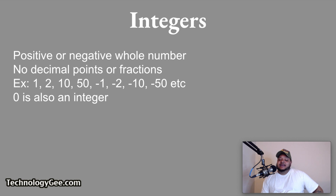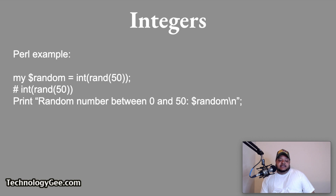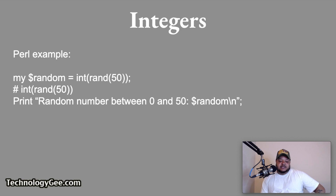The number zero is also considered an integer, even though it has neither a positive nor negative value. In most programming languages, you can convert a number into an integer by using the INT function. So if you had the number 4.5 and typed in an INT function command, it will convert 4.5 into the whole number 4. This could be useful when seeking to obtain a whole number value after randomizing a range of numbers. Here's an example written in Perl: my dollar sign random equals INT random 50, and print "random number between 0 and 50." This script will generate a random number between 0 and 50 once executed.